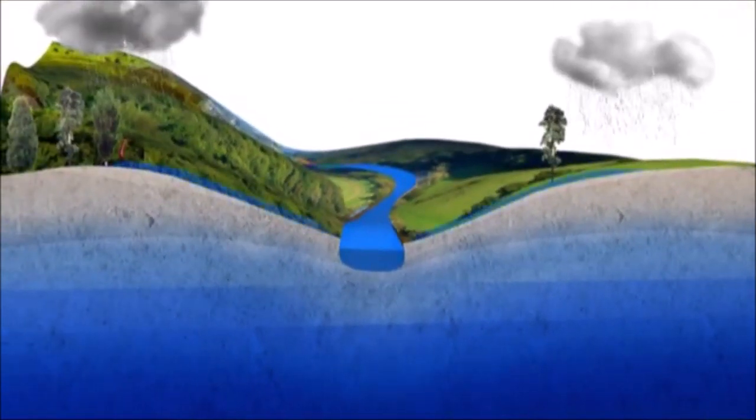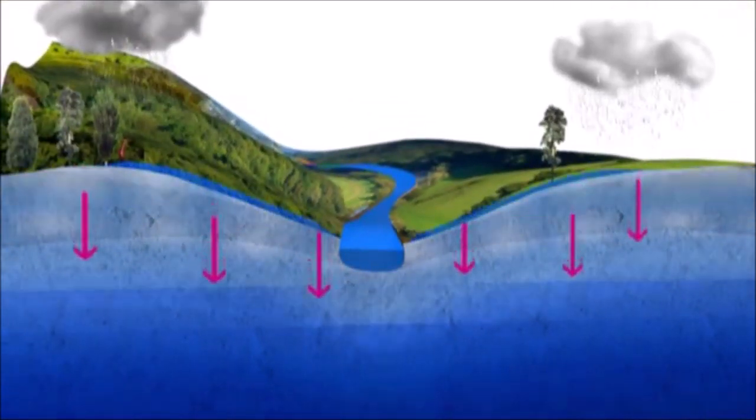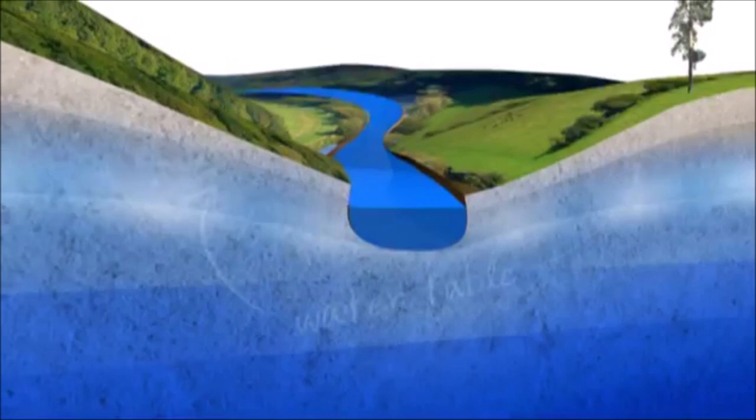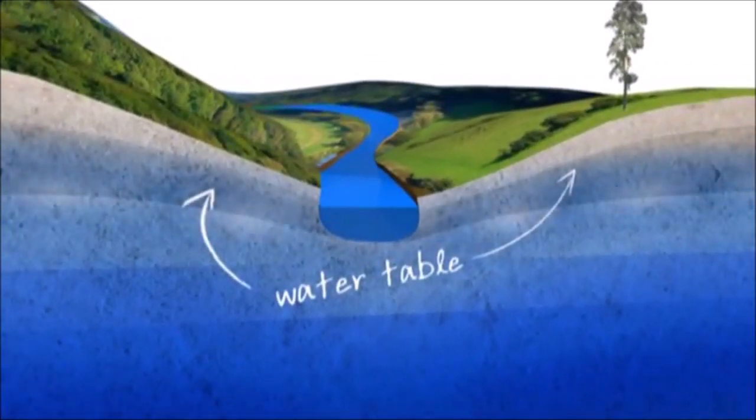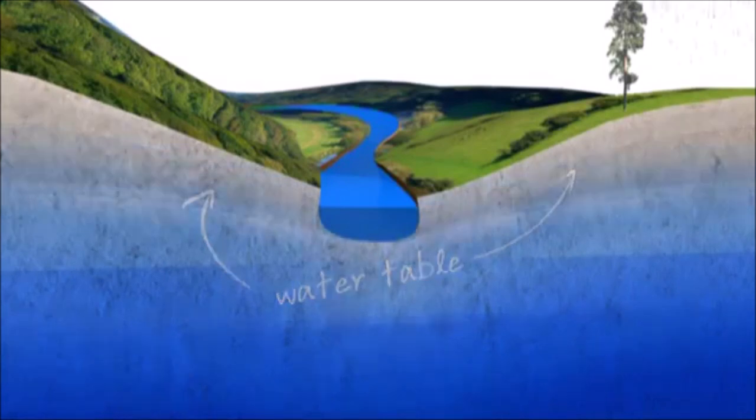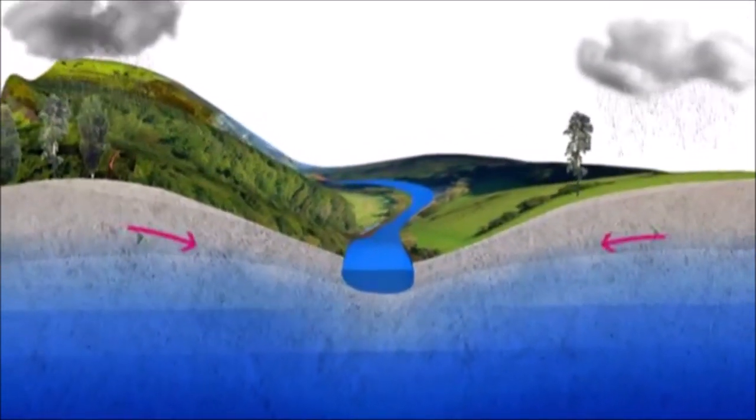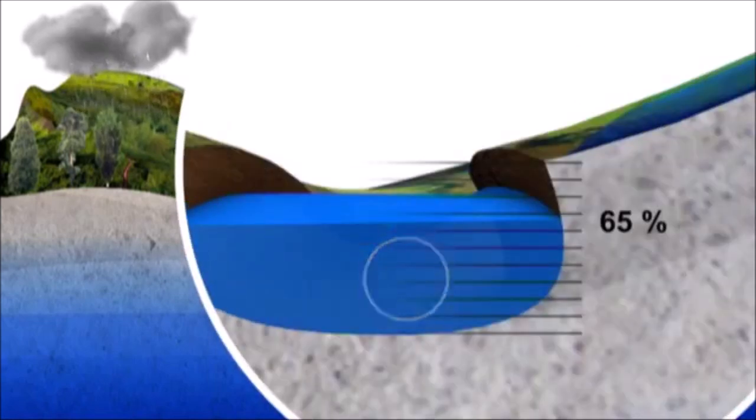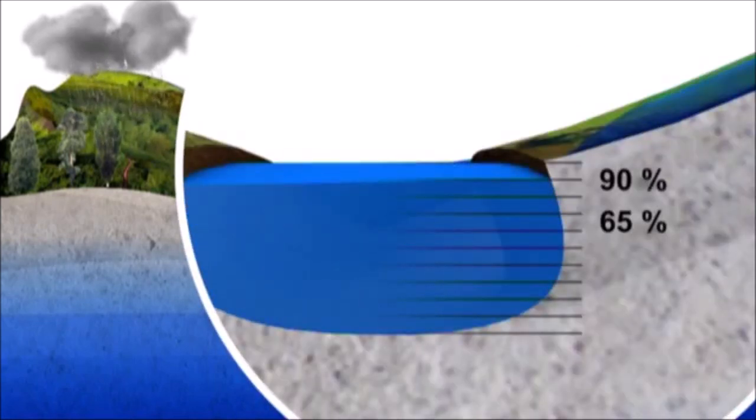For water to reach the aquifer, the ground needs to be saturated, so it soaks through to the rocks beneath. The level of water in an aquifer is called the water table. This follows the shape of the ground surface. Due to gravity, groundwater flows from places where the water table is high to where it's low. It collects in valleys providing between 65 to almost 90% of the flow in rivers.